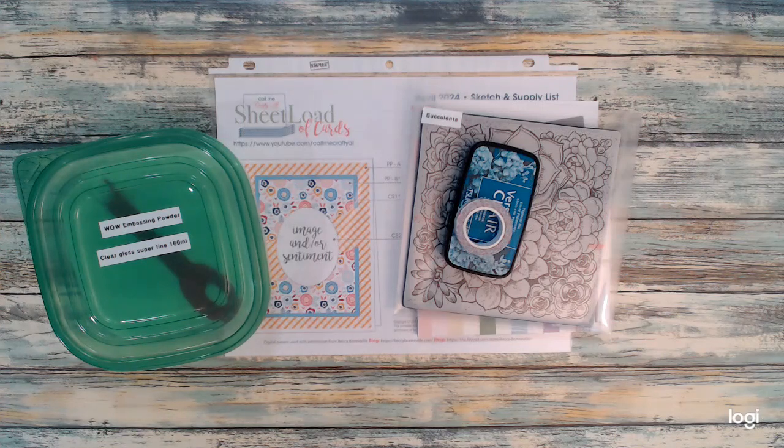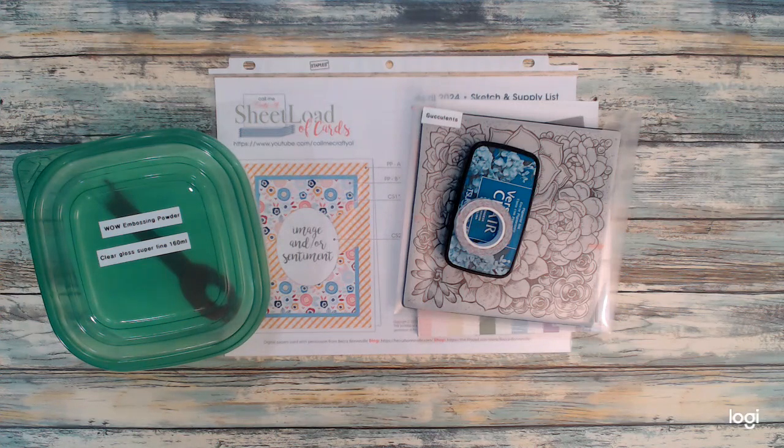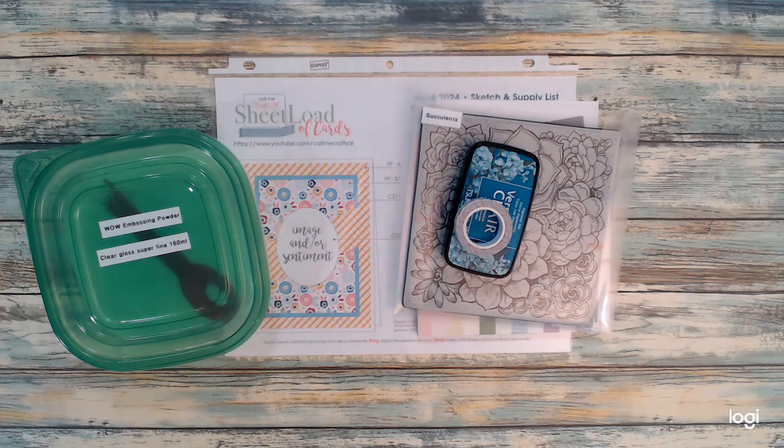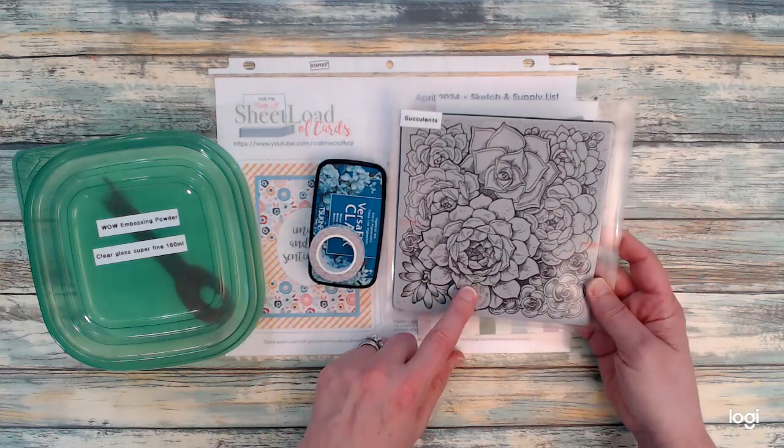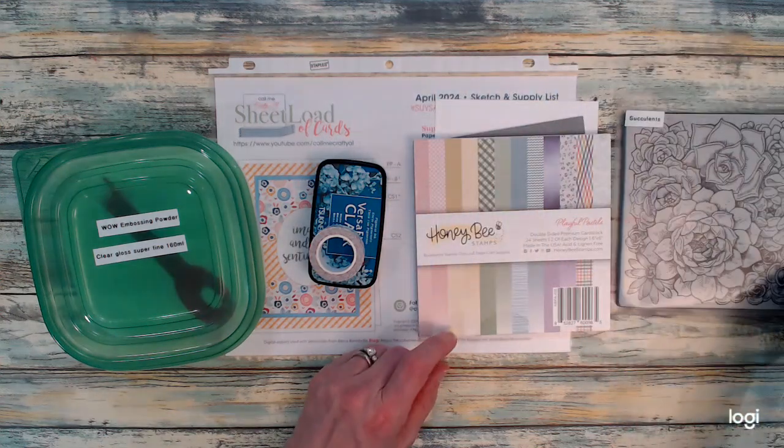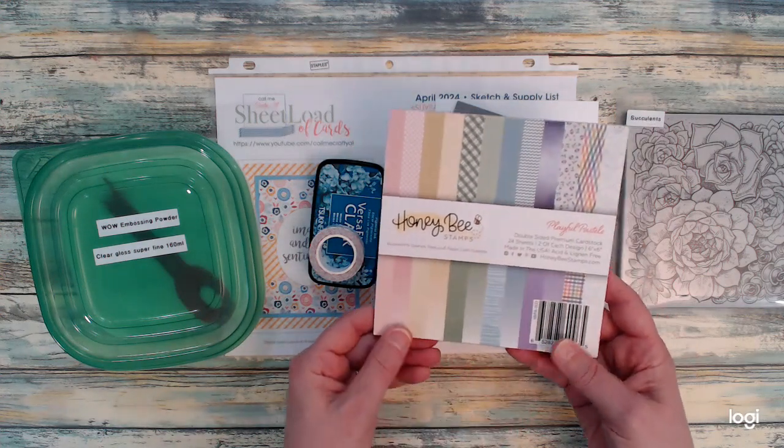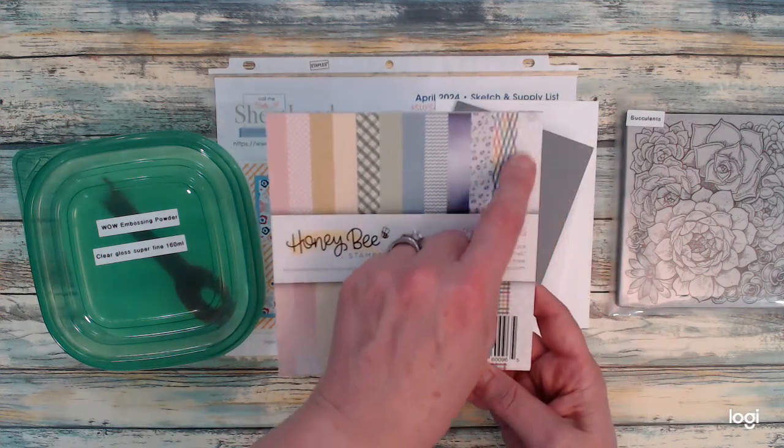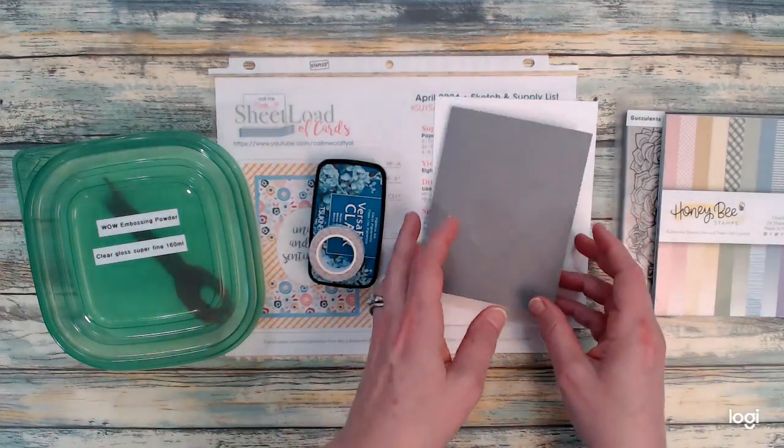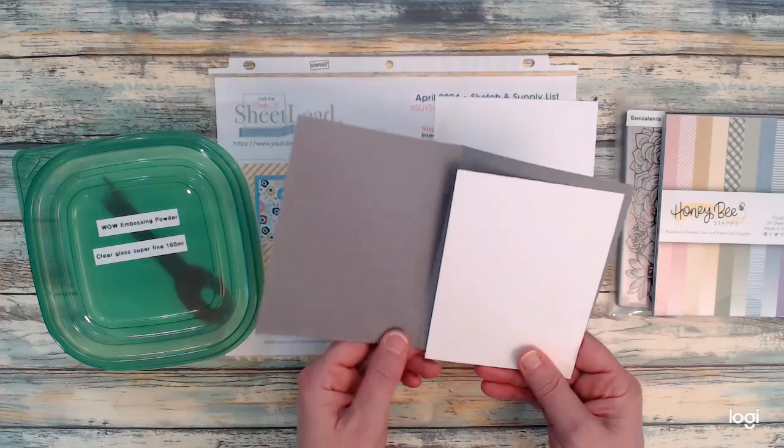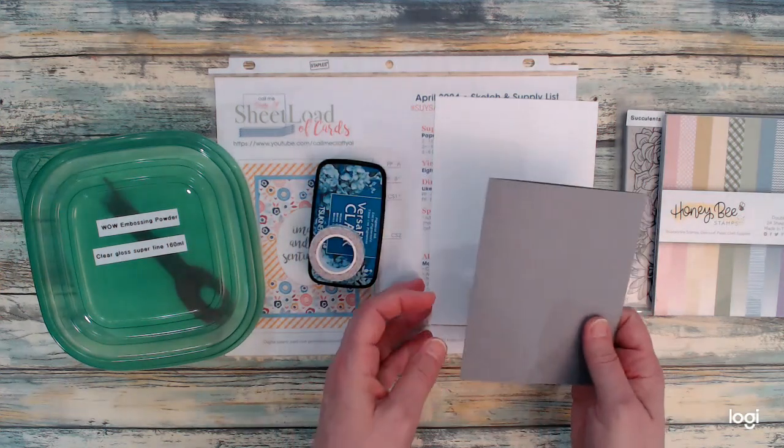For this video today I thought that I would show you how you can use a background stamp to create an embellishment to create cards and I will be using Crafty Elle's Sheetload of Cards latest sheet template April. I'll be using that succulent background stamp and for my papers today I'm using the Honey Bee Playful Pastels and I was going to use that gingham and that floral pattern.